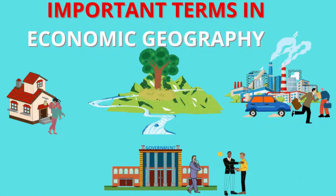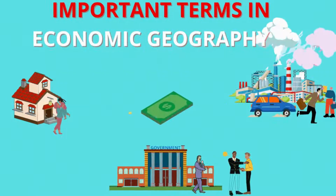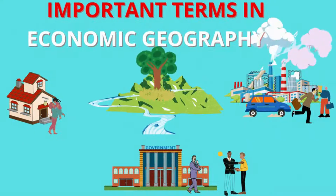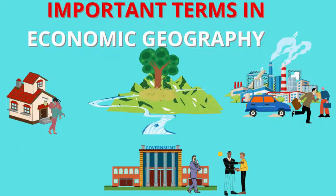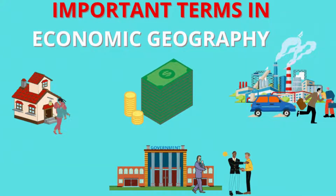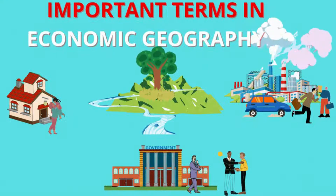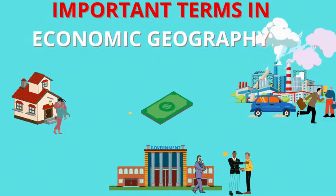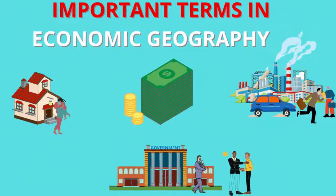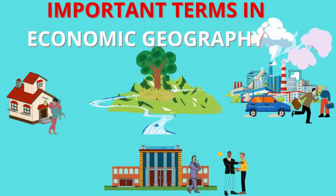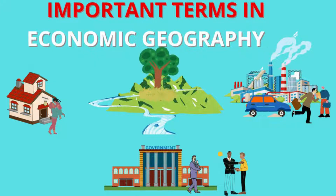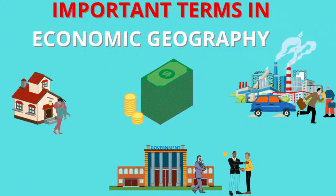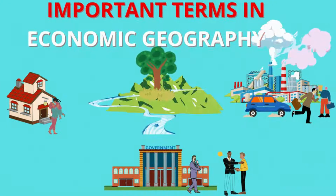Economic geography is a sub-branch of human geography which focuses on economic resources and activities, especially in relation to their locations and the factors influencing their locations.